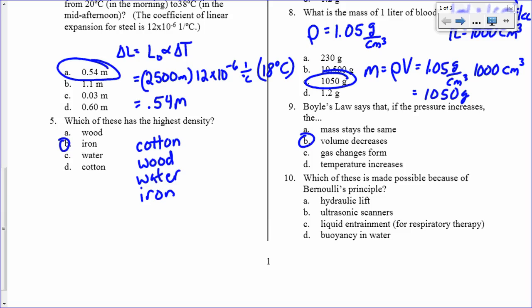Which of these is possible, made possible because of Bernoulli's principle? Remember, Bernoulli's principle says that if the velocity goes up, then the pressure goes down. And that makes liquid entrainment for respiratory therapy possible because you have this tube with a high-velocity air or fluid or whatever traveling through it. And then you can have this other tube here, this reservoir of sorts.